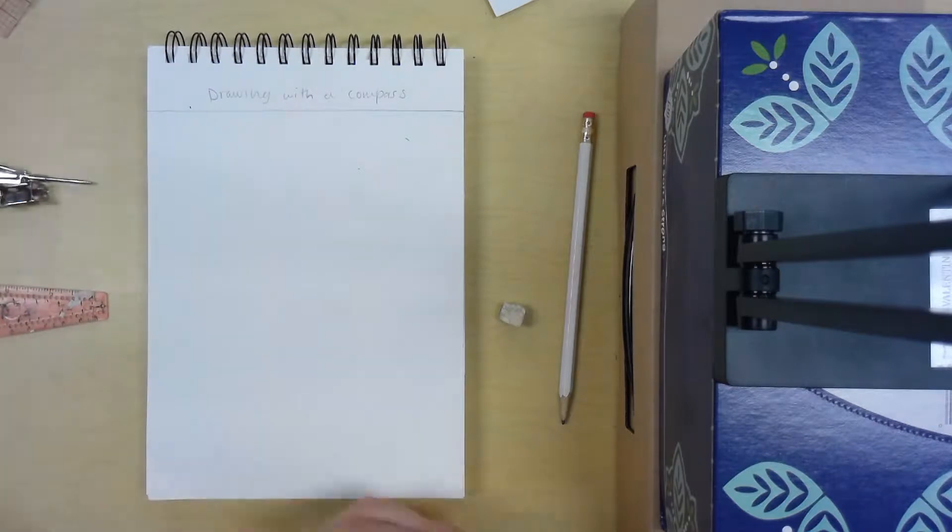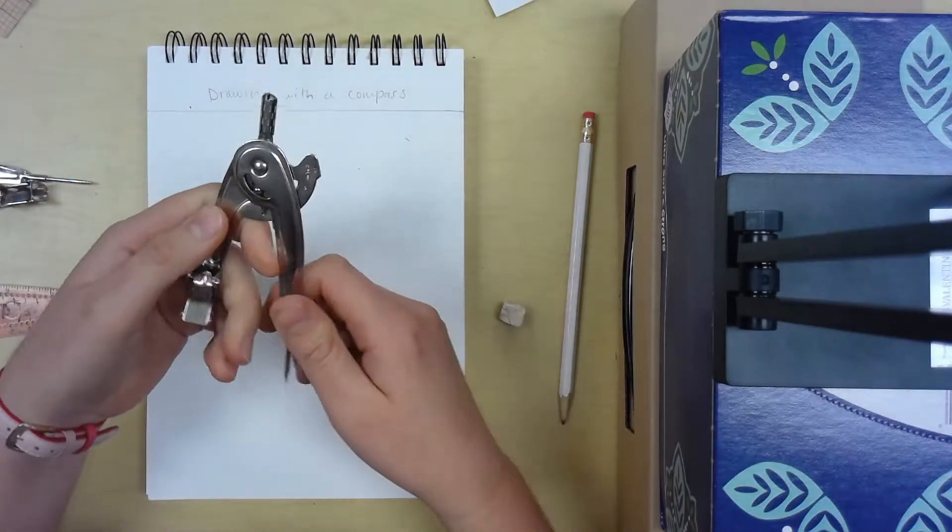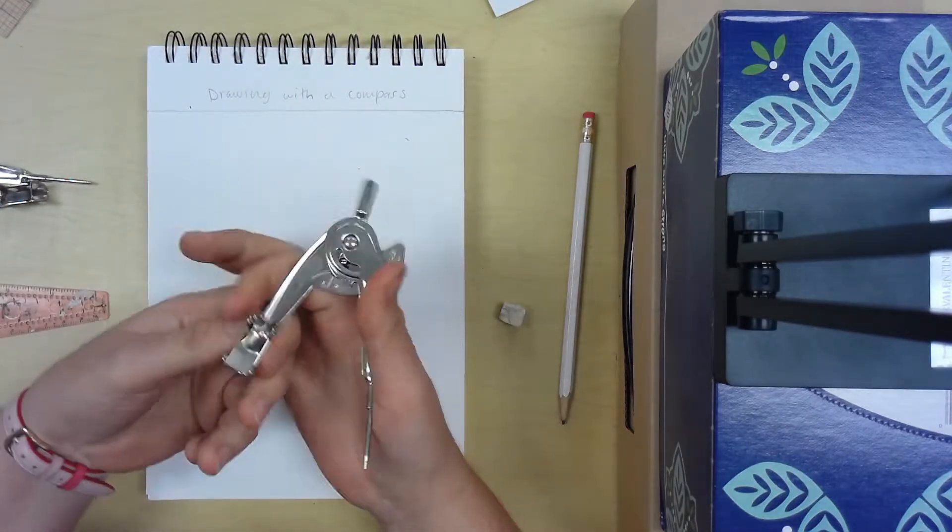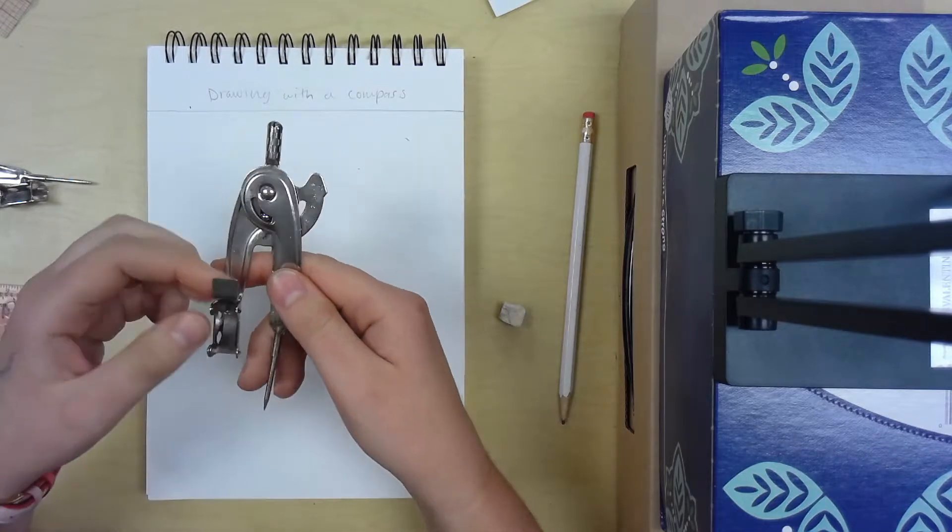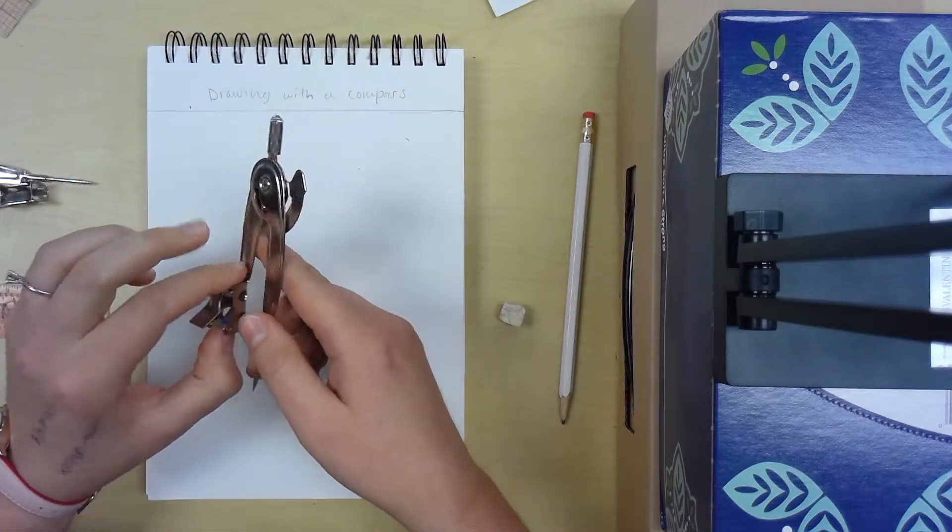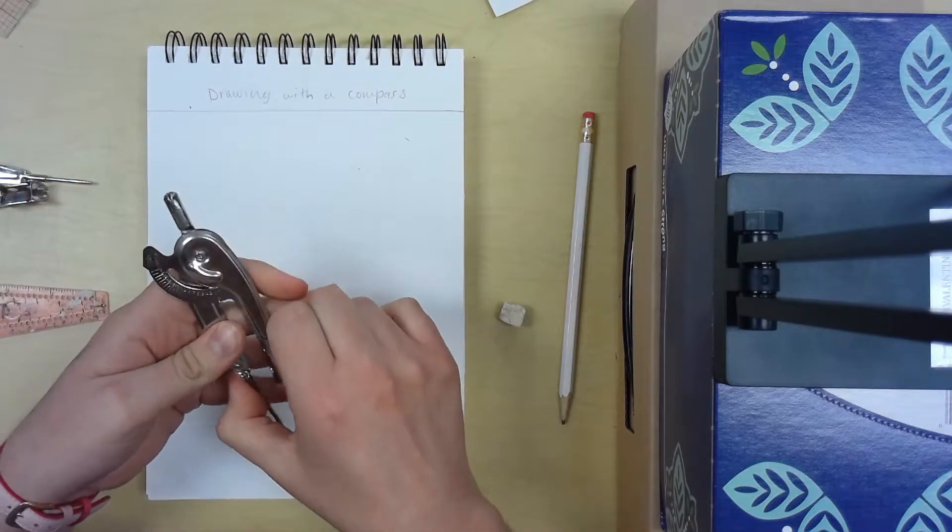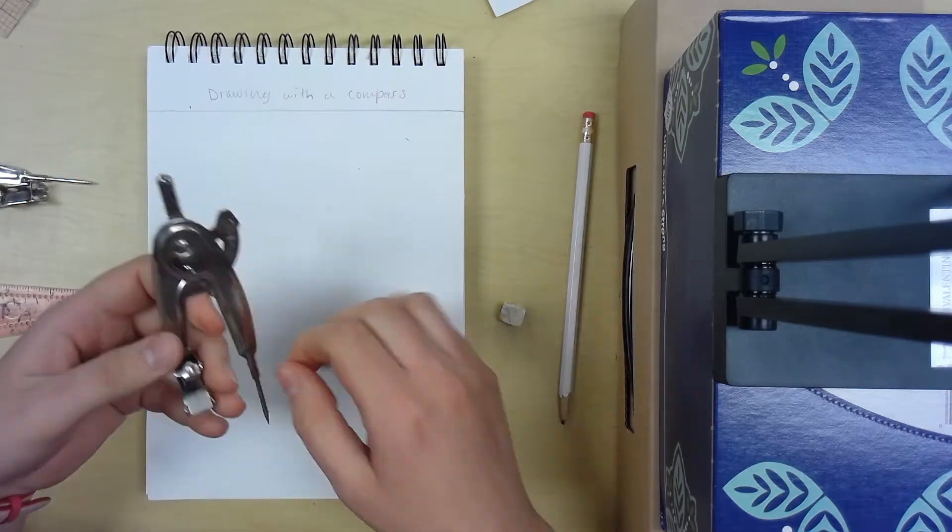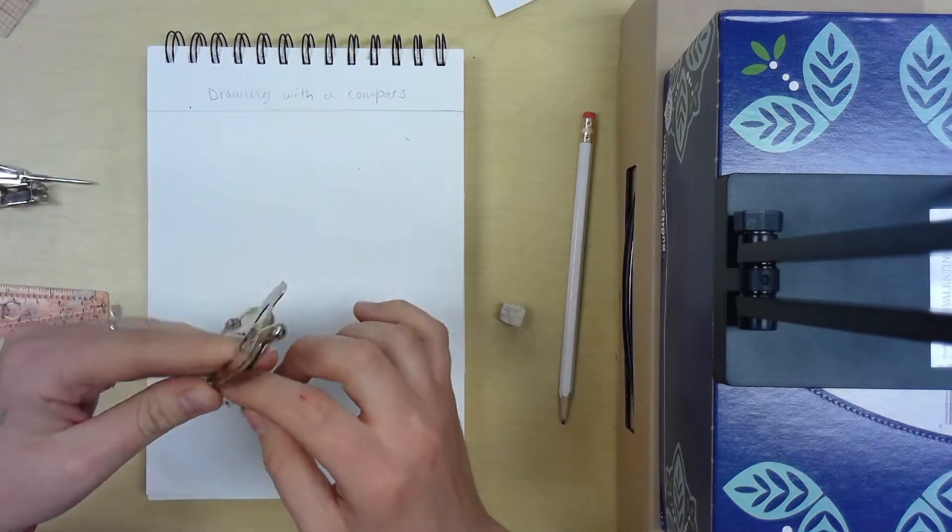I've got right here just your normal compass. This one's made out of metal. You can buy these made out of plastic. I don't think they make wooden ones, but these are tools that really help you draw perfect circles.